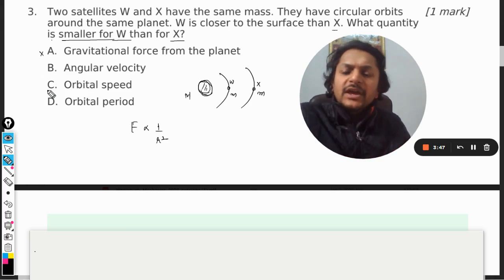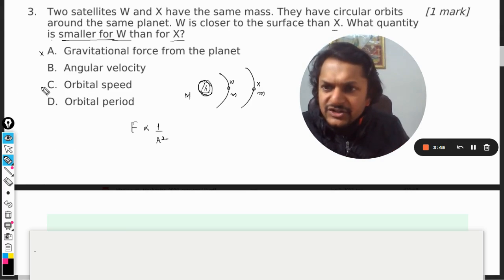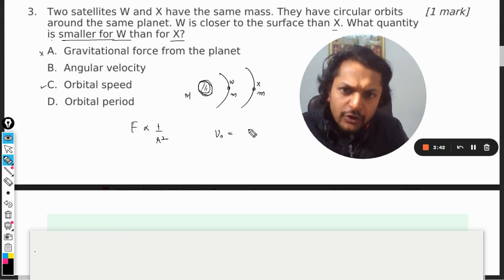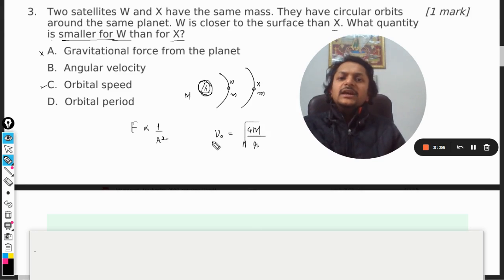Okay, as far as orbital speed is concerned, let us talk about this now. What is the formula for the orbital speed? GM by r square root. So you see that the formula for orbital speed of the satellite does not depend on the mass of satellite.